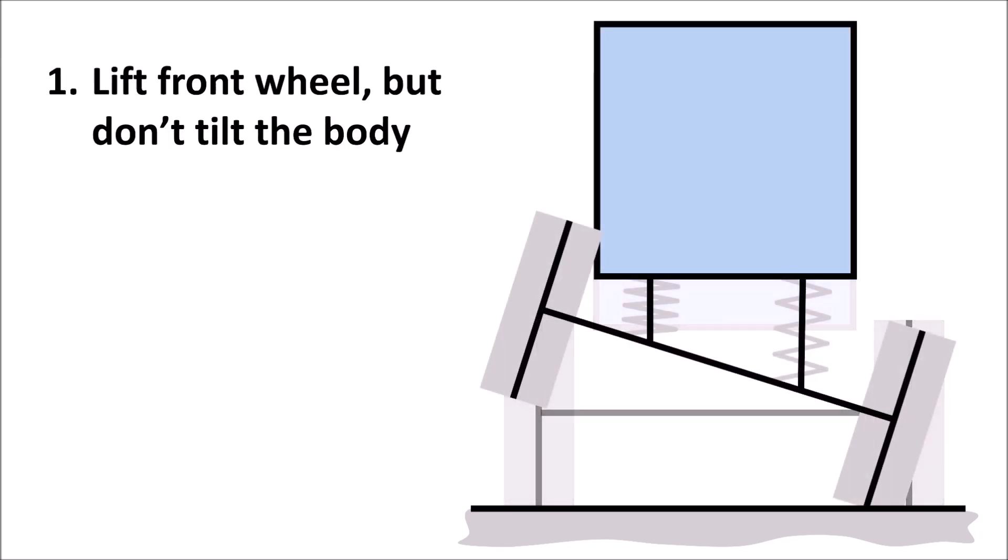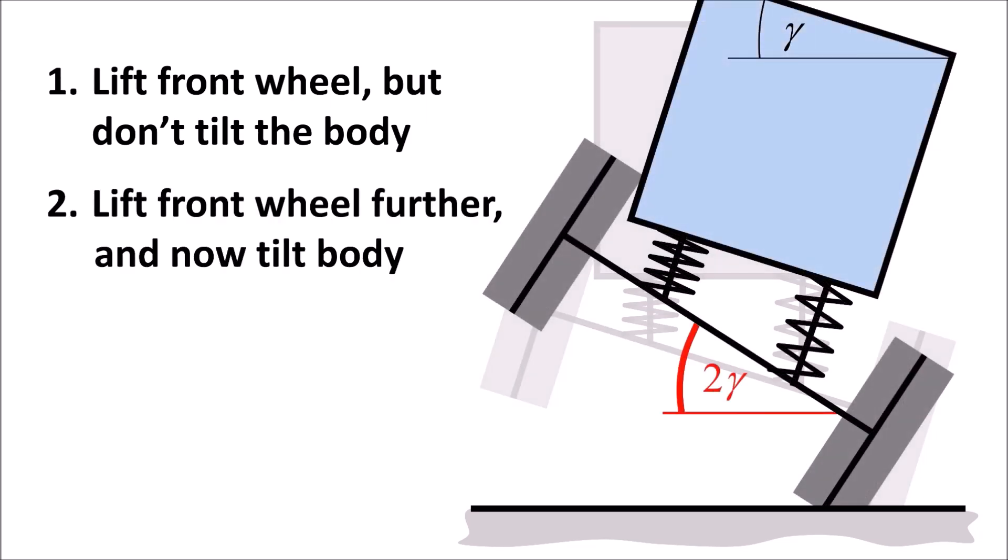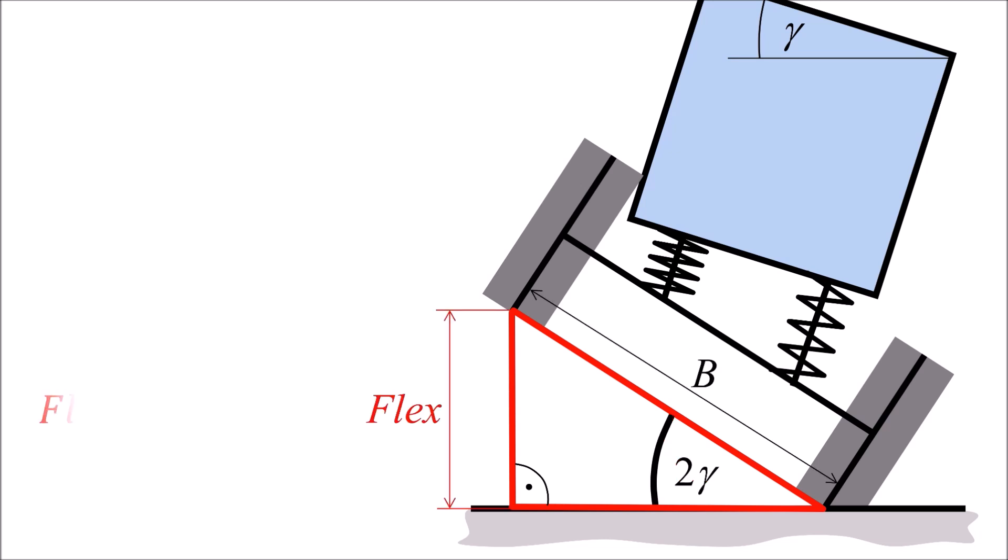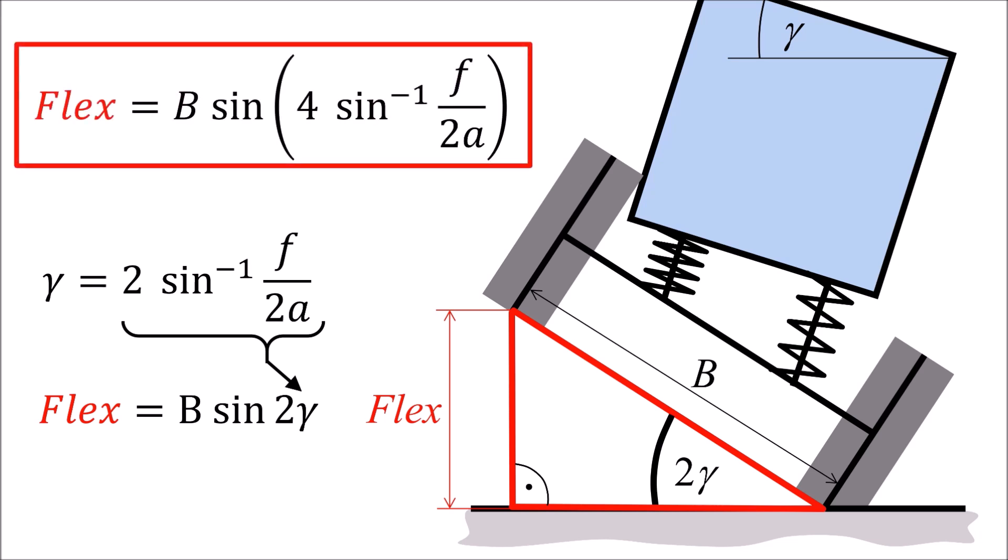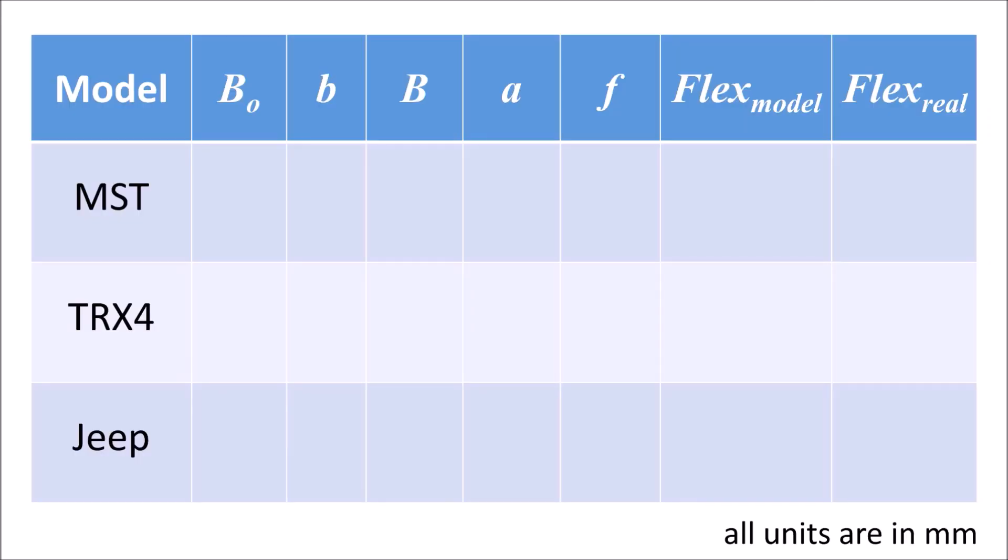First, lift the frontal wheel but don't tilt the body. And then lift the frontal wheel further by tilting the body. This leads to a tilting of the front axis of two times gamma. The flex can be determined again by the sine rule using the expression of gamma as derived before.